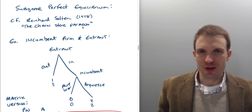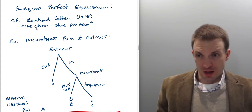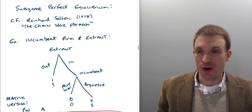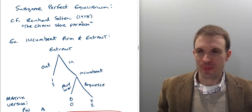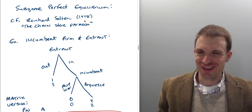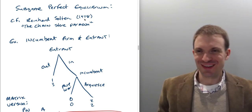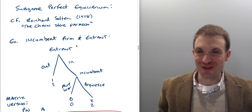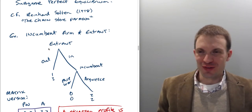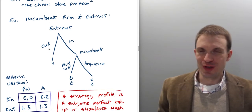Selten, Nash, and John Harsanyi won the Nobel Prize in Economics — there's some interesting history about what that prize is actually called, but to put that aside — and that was in 1994.